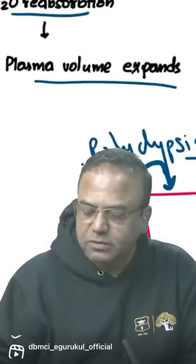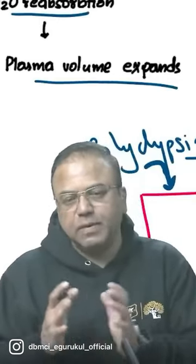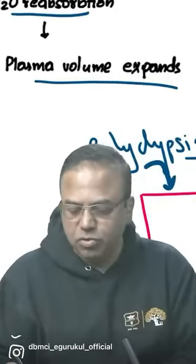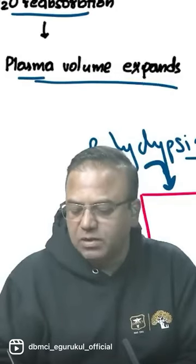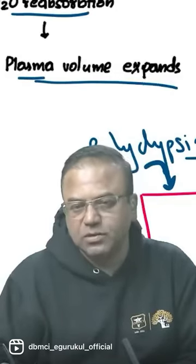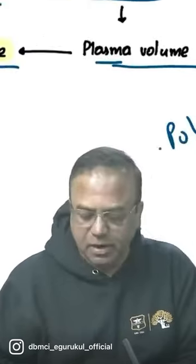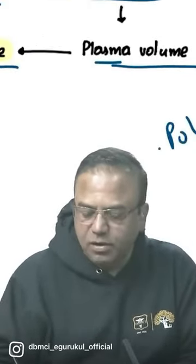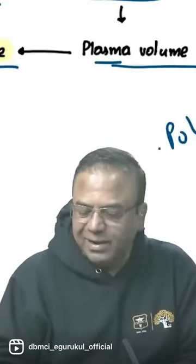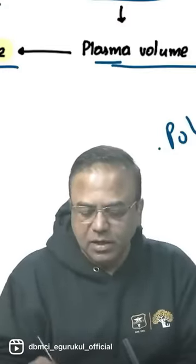This water retention expands the plasma volume and dilutes the serum sodium. On top of that, volume compensation happens — stretching of the atria causes release of natriuretic peptide. Natriuretic peptide, as the name suggests, causes natriuresis, losing sodium and water. Effectively, this patient ends up with euvolemia.